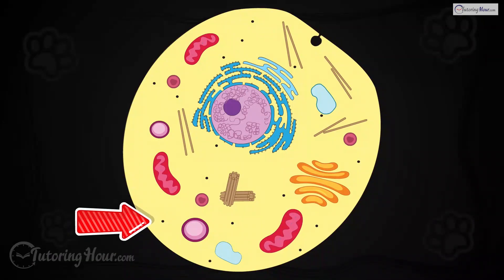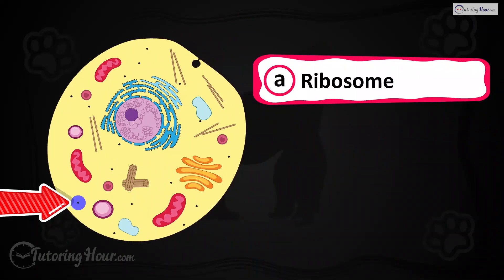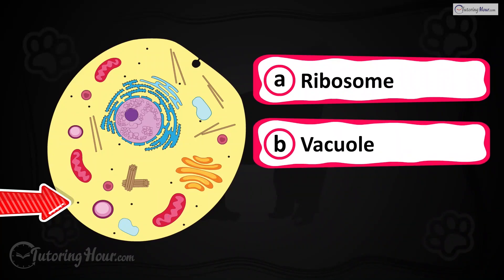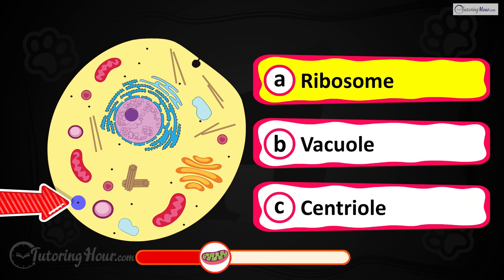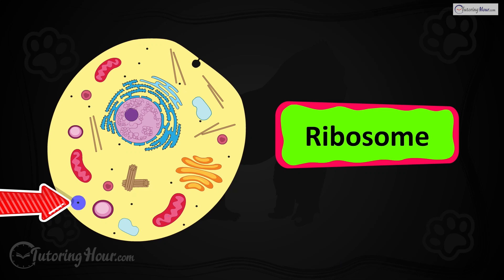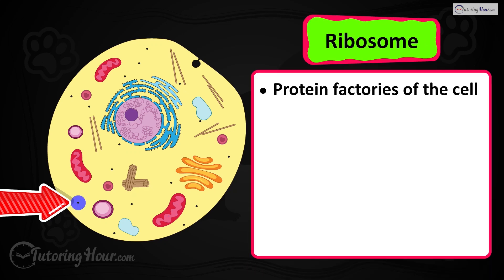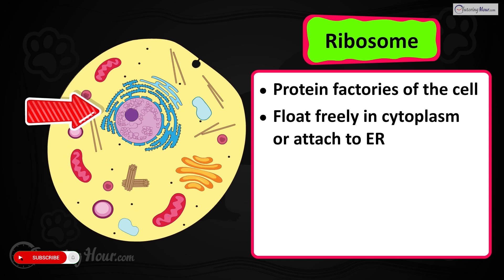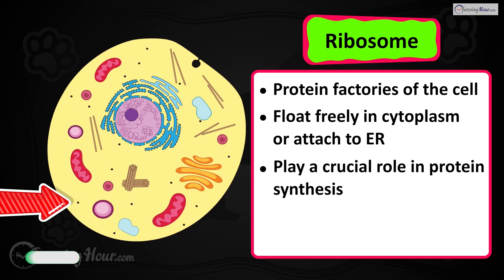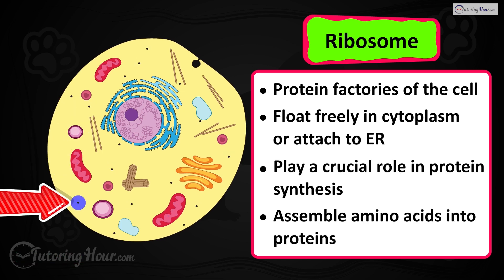Can you identify the highlighted part in the cell? Is it A) ribosome, B) vacuole, or C) centriole? The correct answer is the ribosome. Ribosomes are the protein factories, floating freely in the cytoplasm or attached to the endoplasmic reticulum. They play a crucial role in protein synthesis by assembling amino acids into proteins.